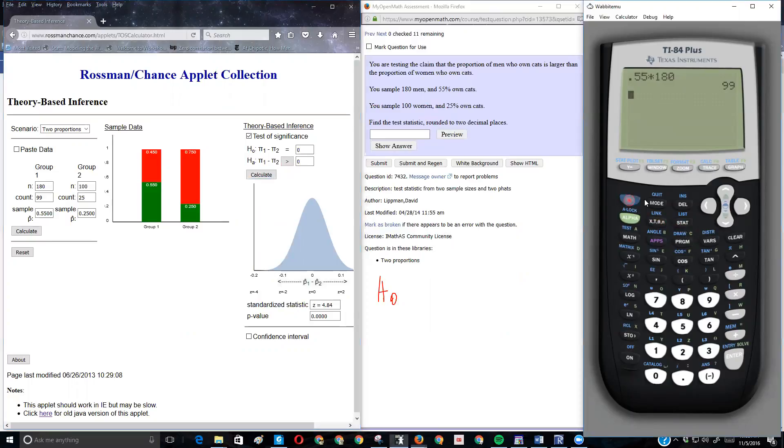Let's see what the calculator tells me. I'm going to do stat, test, and I'm going to do two proportion Z test, choice 6. Then they ask me what are my counts, just like the applet. 99 and 180. It's important to put them in the same order because if you reverse your order, you're going to get a negative Z score. And chances are, Rossman chance or my open math would mark that off. And 25 and 100, right?